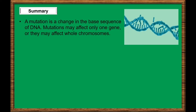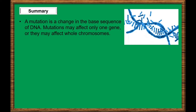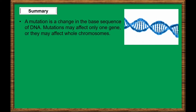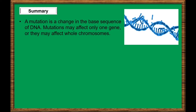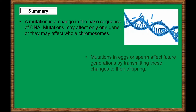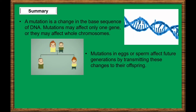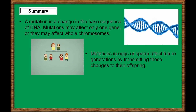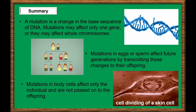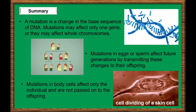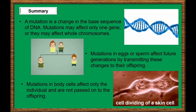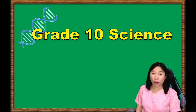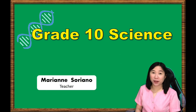To summarize what you have learned: a mutation is a change in the base sequence of DNA. Mutations may affect only one gene, or they may affect whole chromosomes. Mutations in eggs or sperm affect future generations by transmitting these changes to their offspring. Mutations in body cells affect only the individual and are not passed on to the offspring. I hope you learned and enjoyed our lesson. This is Maumarian Soriano. See you in the next lesson.